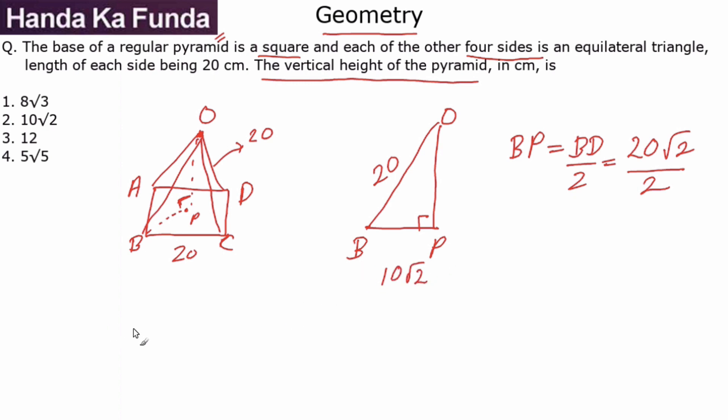Once I have the value of BP, OP will be very simple to calculate. We can just apply Pythagoras: square root of 20 squared, that is 400, minus the square of BP or 10 root 2, so that is 200. OP is square root of 200 or 10 root 2, which is given to me as option 2.